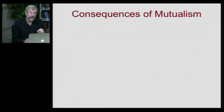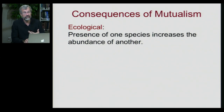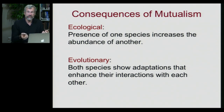Looking at the different possible outcomes of interactions, let's first focus on mutual benefit or mutualism. The consequence of mutualism can be ecological, so that the presence of one species increases the abundance of another, and it can also be evolutionary. Both species will show adaptations that enhance their interactions with each other — two different species that really want to benefit from that interaction more effectively.